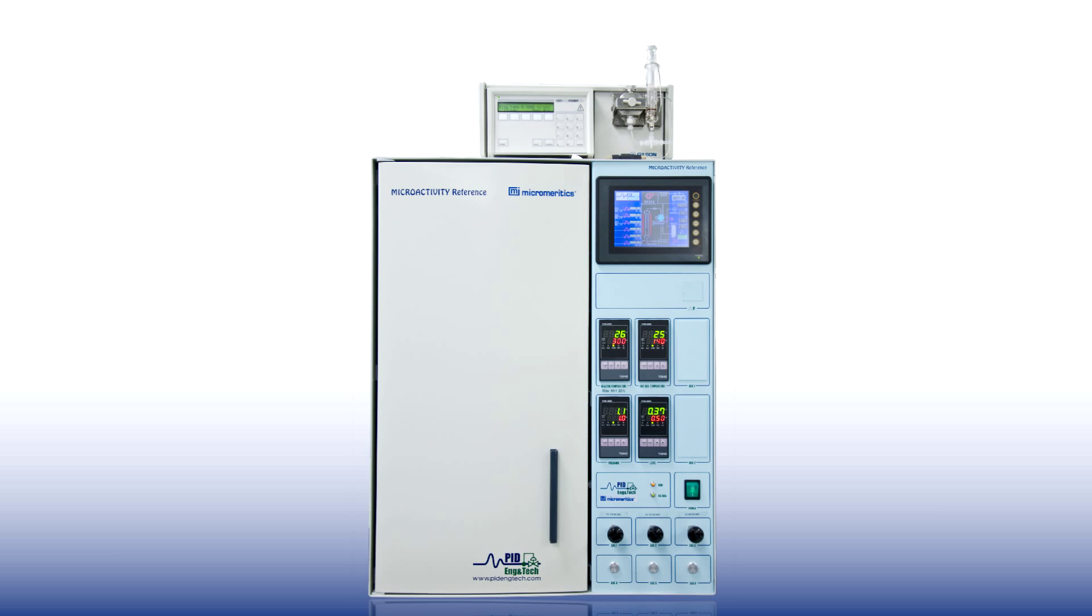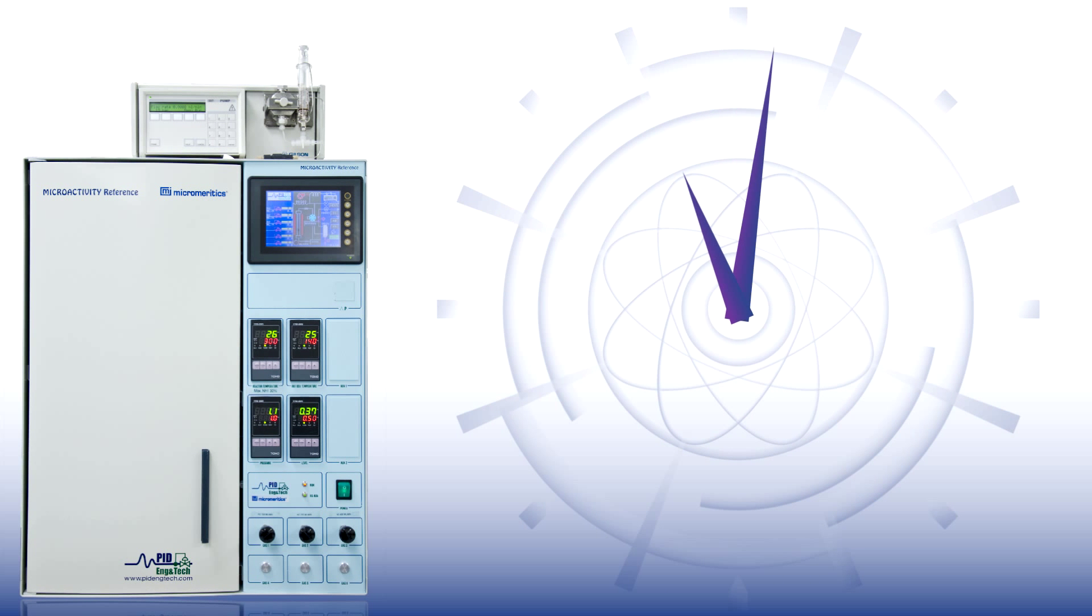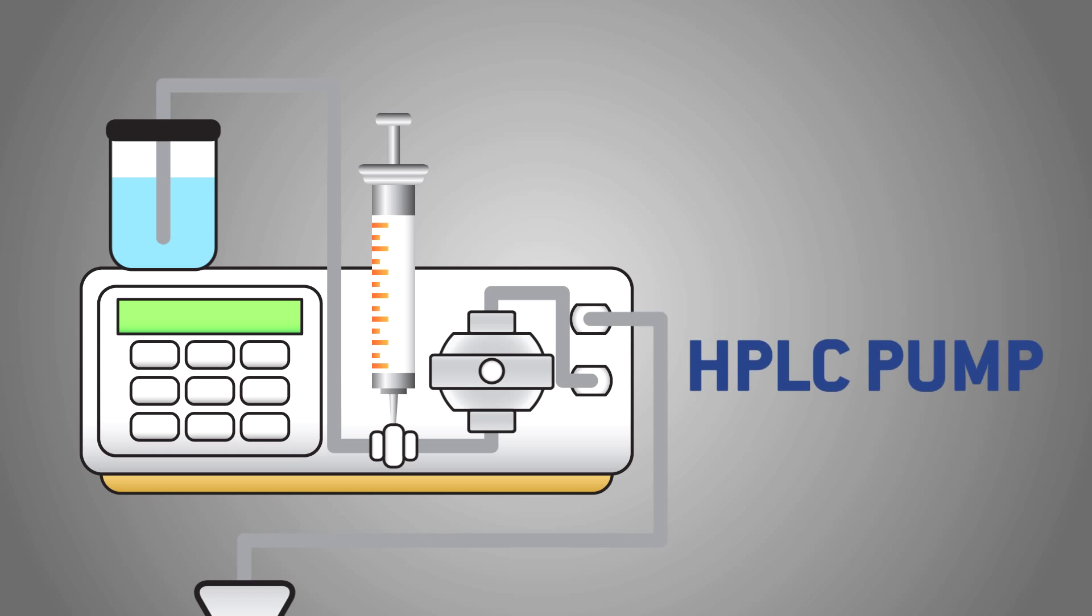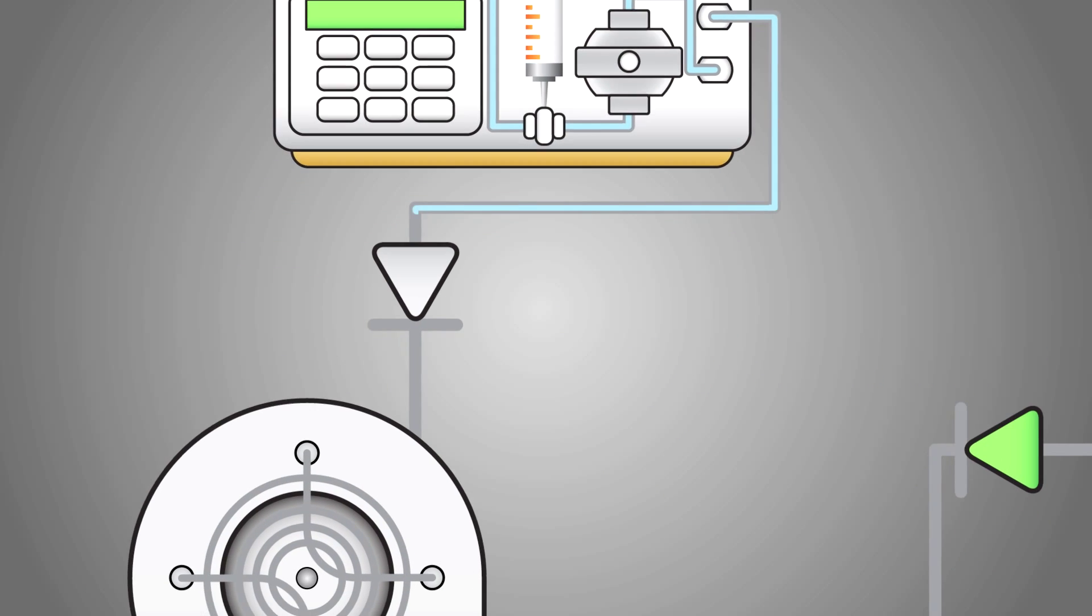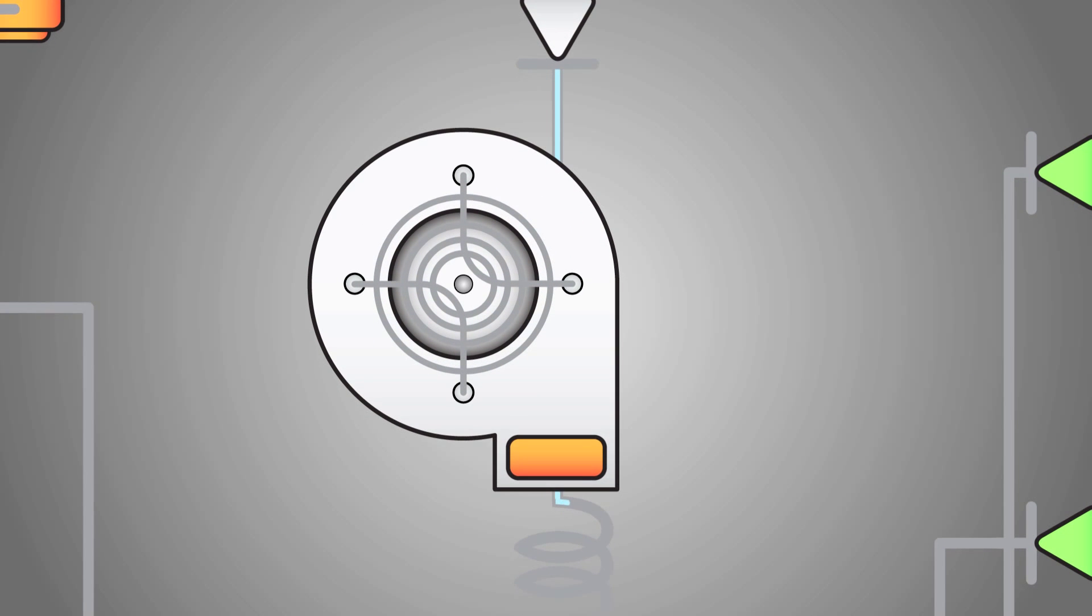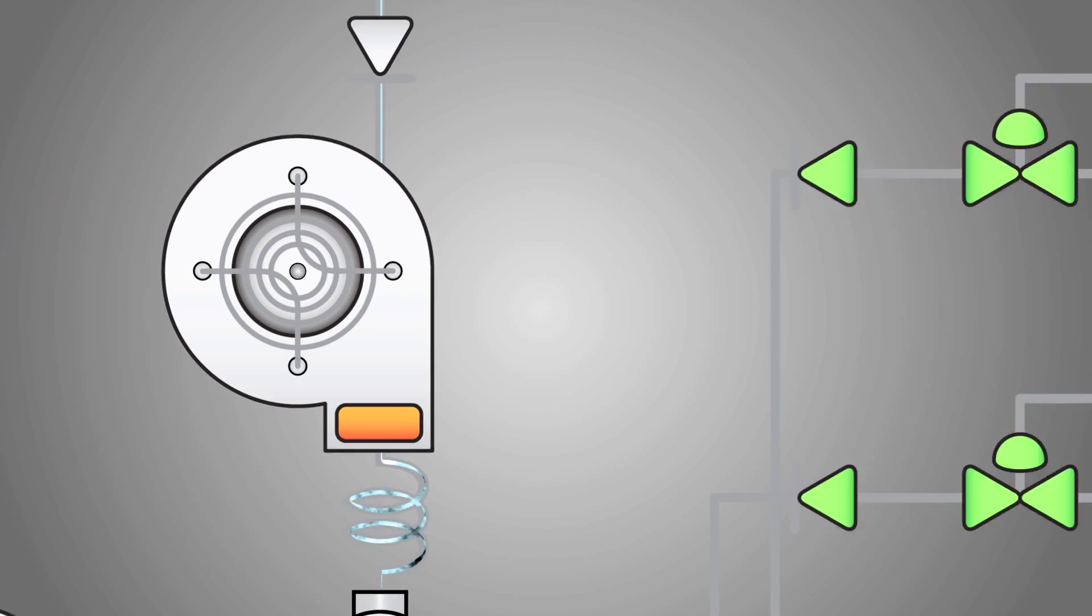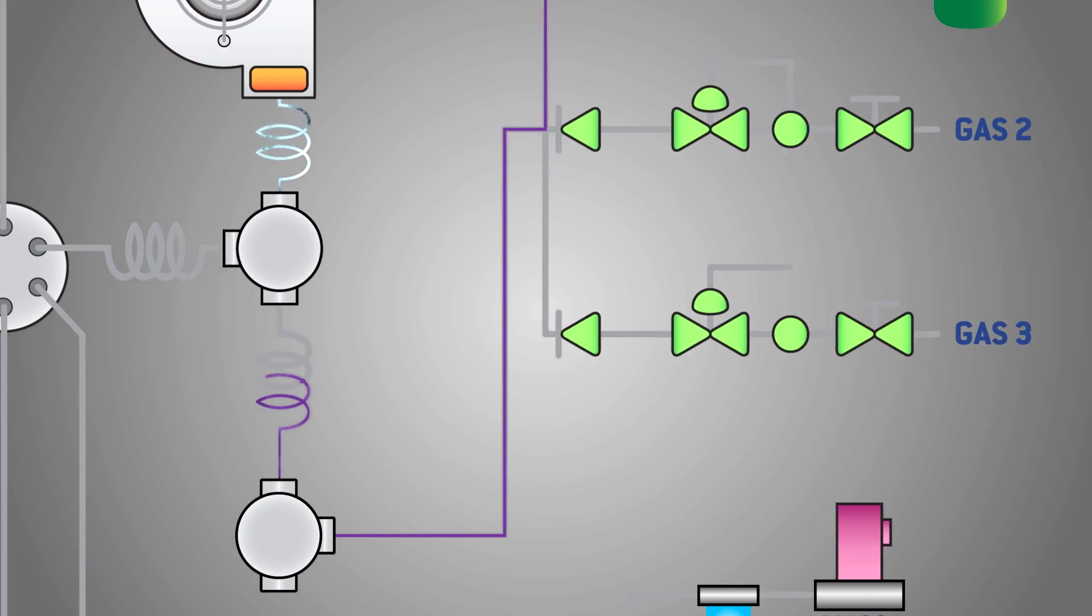Let's take a look at how this revolutionary system works. The PID will need about an hour to meet reactor conditions before proceeding. The HPLC pump delivers liquid to the hotbox. The liquid becomes a vapor once it passes through and is heated by the liquid evaporator.